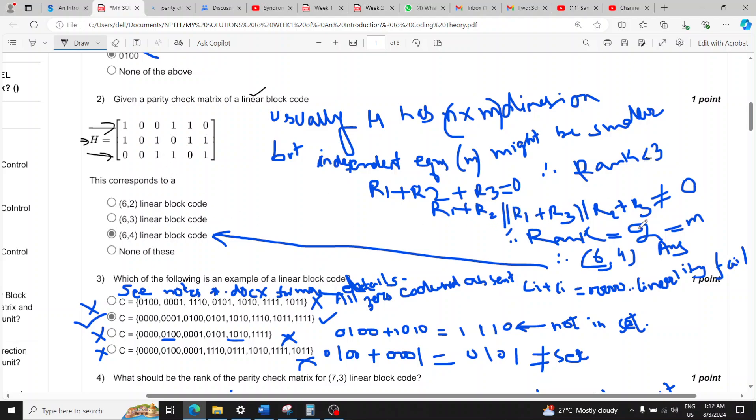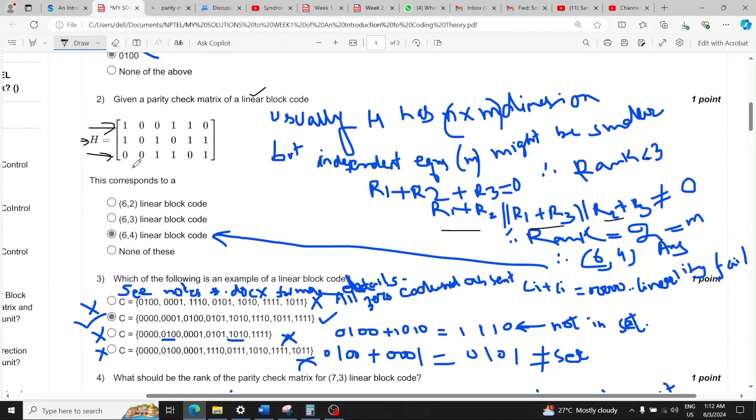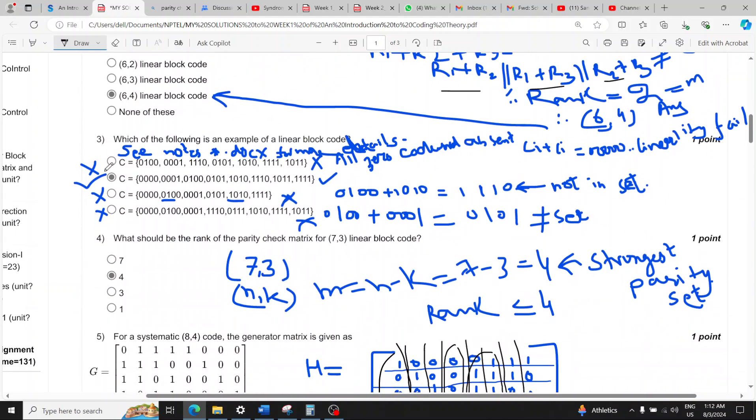Rank is less than three. If you add any two columns, all permutations are written here, when we add them you get not equal to zero. So rank of this is two, so six minus two is four and four is the amount of messages. So option C for question two is the answer.